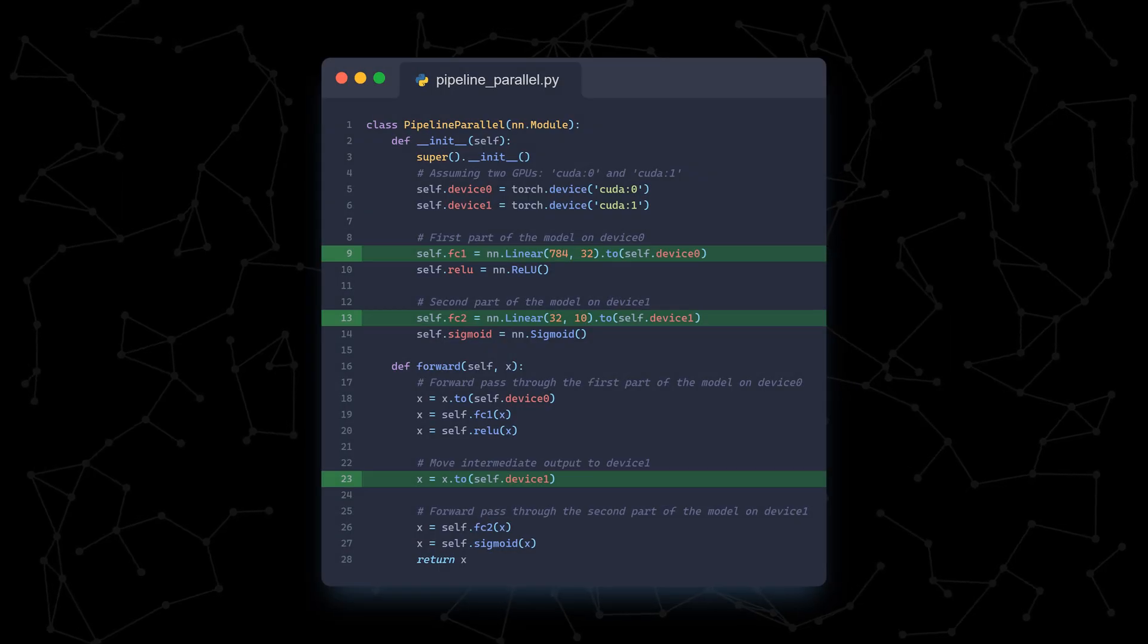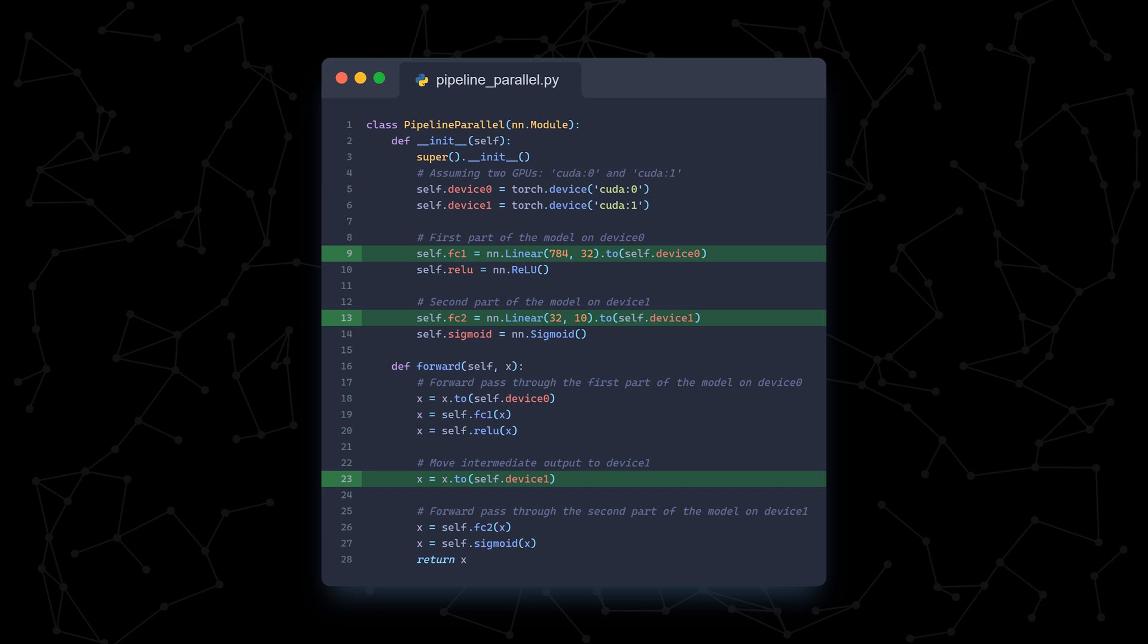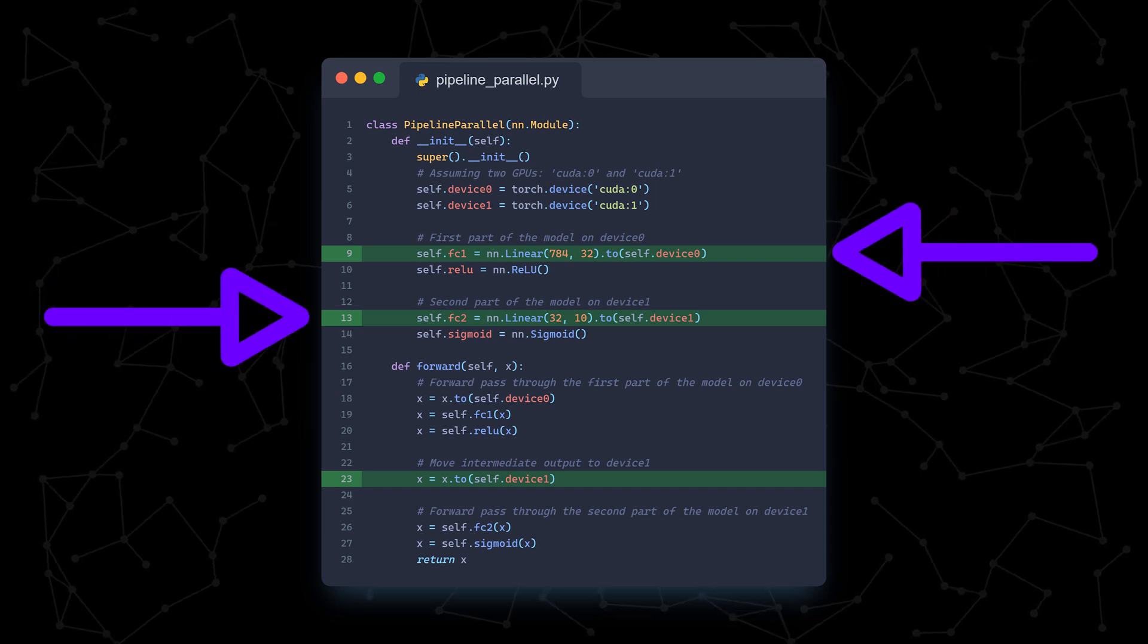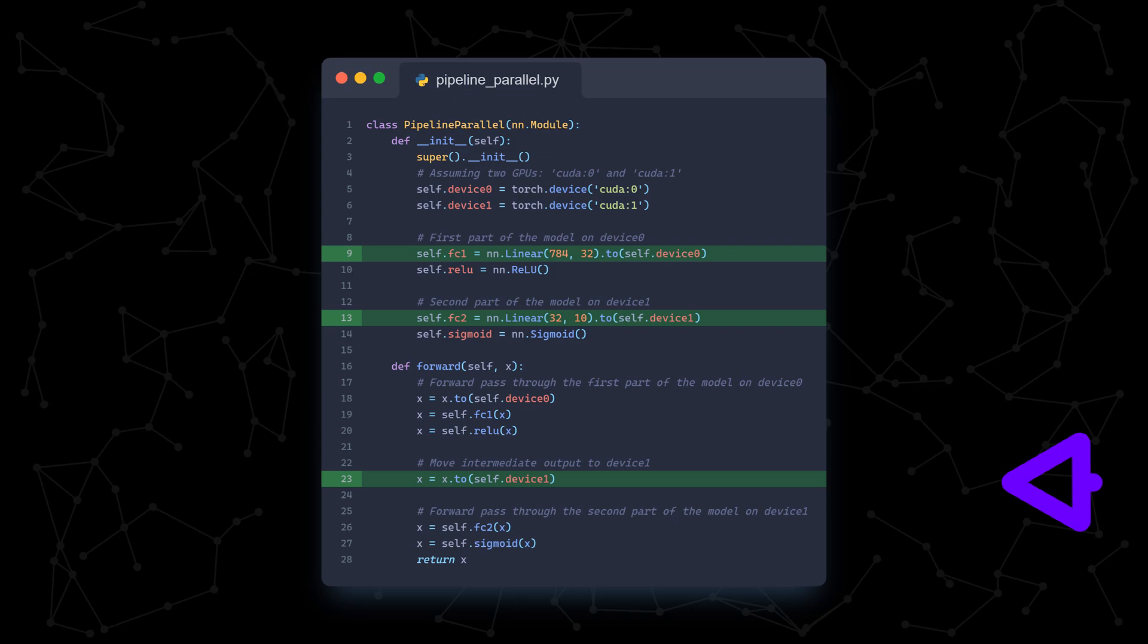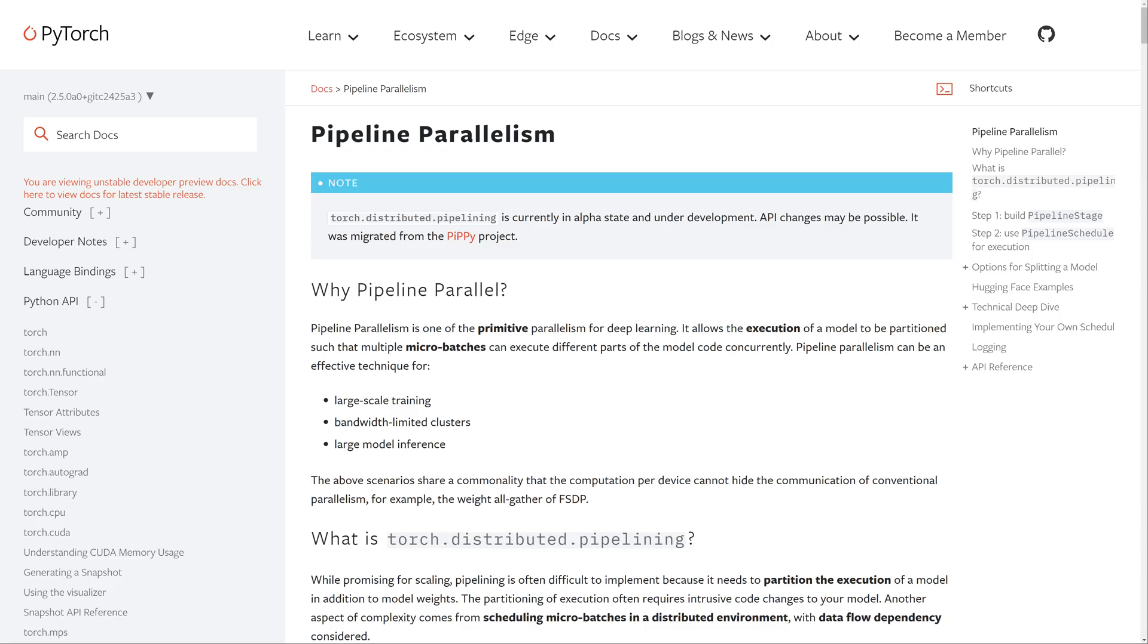A basic implementation of naive pipeline parallelism might look like this in code. We assign each half of the model to a different GPU and transfer the activations between GPUs in the forward pass. In fact, PyTorch has a pipelining module that is also worth checking out if you're interested. Micro-batching is very useful, but it leaves some performance on the table because we can't achieve a consistent 100% utilization of all of our GPUs.